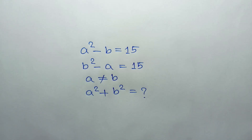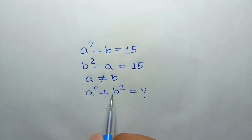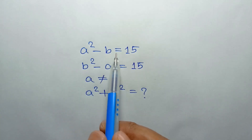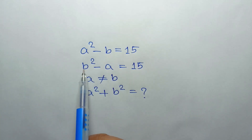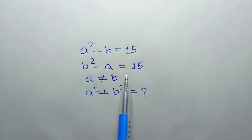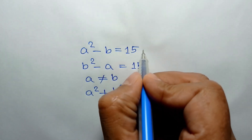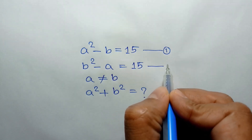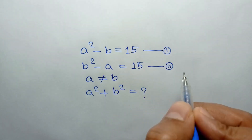Hi everyone. In this video I am going to show how to find the value of A squared plus B squared, where A squared minus B is equal to 15 — call this equation 1 — and B squared minus A is equal to 15 — call this equation 2 — and A is not equal to B.